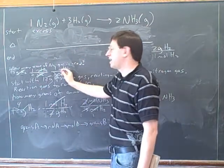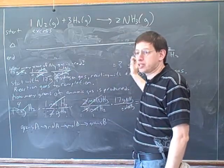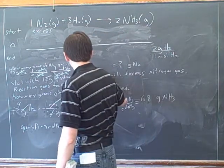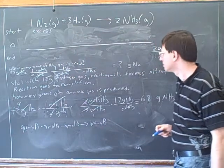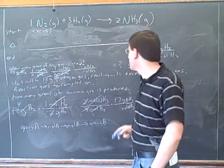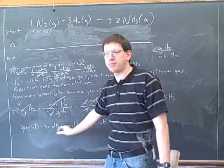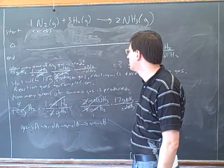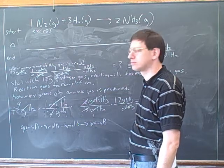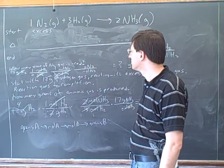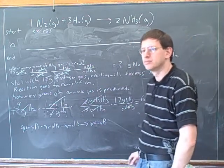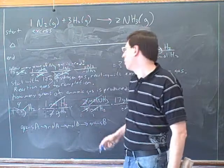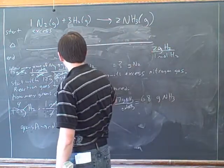Now I have moles of nitrogen, but that's not my target units — this is why we write target units first, so we know when we're done. I need another conversion ratio: moles of N2 on the bottom, grams of N2 on top. As soon as possible, produce the target units — following the pattern: grams of A → moles of A → moles of B → grams of B. The number is 28 grams of N2 over 1 mole. If you look up nitrogen in the periodic table you see 14, and since N2 has two nitrogens, two times 14 equals 28.